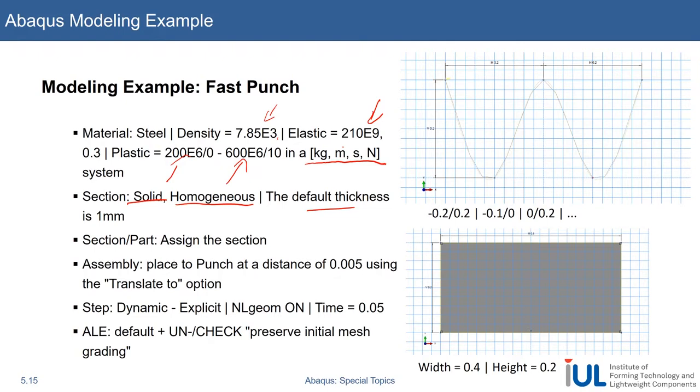And then I think we did it the last time, that we use the translate to option to actually place the punch very close to our block. And then when we create the step, not as before, we won't use static general, but here is where the fun begins. We'll use dynamic explicit analysis. And yes, as I said before, we can write from the beginning or we can do this later, define ALE. And for example, do a small variation if we check or uncheck the radio button preserve initial mesh grading.